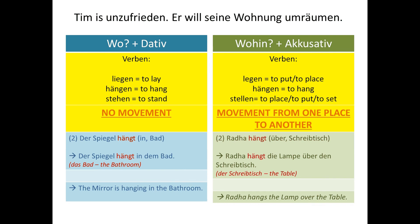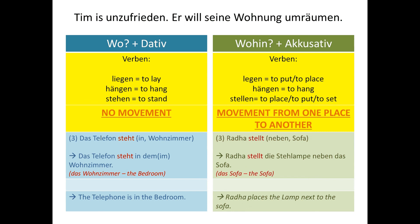In the second accusative example: 'Radha hängt die Lampe über den Schreibtisch' — Radha hangs the lamp over the desk. Here Radha is performing the action, so there is movement. 'Der Schreibtisch' is masculine and changes to 'den Schreibtisch' in accusative. Then: 'Das Telefon steht in dem Wohnzimmer' — the telephone is in the living room, no movement, dative.